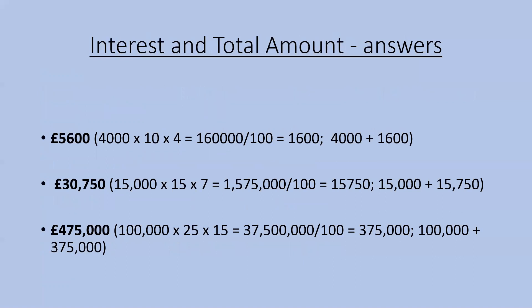Here are the answers. In the case of the first one, the total amount to pay back would be £5,600. This is worked out by doing 4,000 times 10 times 4, which equals 160,000. Divide that by 100 to get an interest figure of £1,600. Then add the £4,000 loan to the £1,600 interest, giving a total to pay back of £5,600.